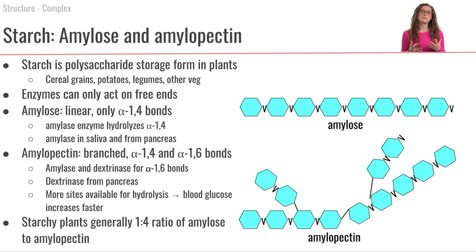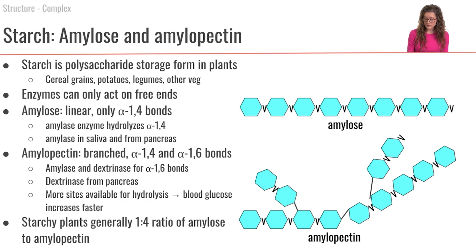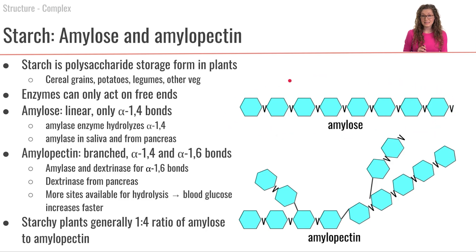Starch is a polysaccharide storage form of carbohydrate in plants. Different plant types — cereal grains, potatoes, legumes, and other vegetables — all contain starch. Starch comes in two different forms. The first is amylose, which is a long linear chain of glucose molecules all bound together with alpha-1,4 linkages, as shown here.